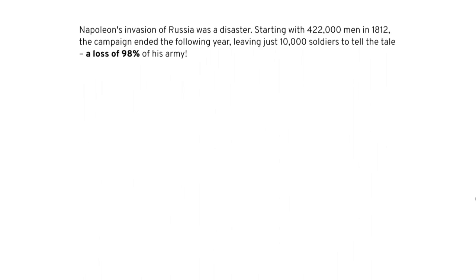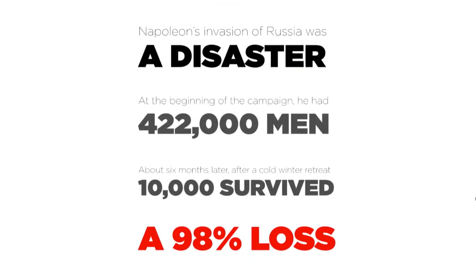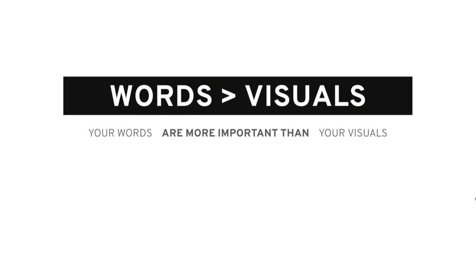And finally, let me try to implant an image: it was a disaster — 422,000 men to start, 10,000 men at the end, a 98% loss. What image are you seeing? Someone in the audience said a slope graph — and yes, that's an option. A slope diagram with a big giant label reading '98% loss' could work. Your words can drive you to visuals — multiple visuals, yes. The words could even stand alone, using design-y type things to make words work in a visual way. Which brings me back to my first point: your words are more important than your visuals because they can stand alone. But the second point is that your words will lead you to your visuals.